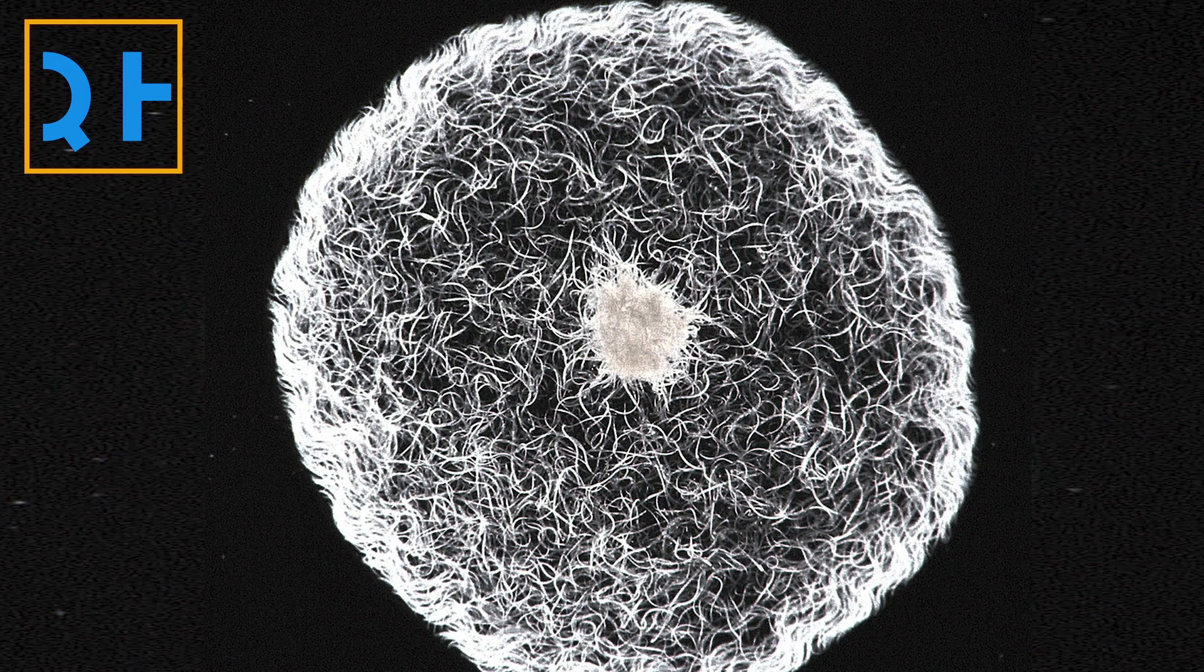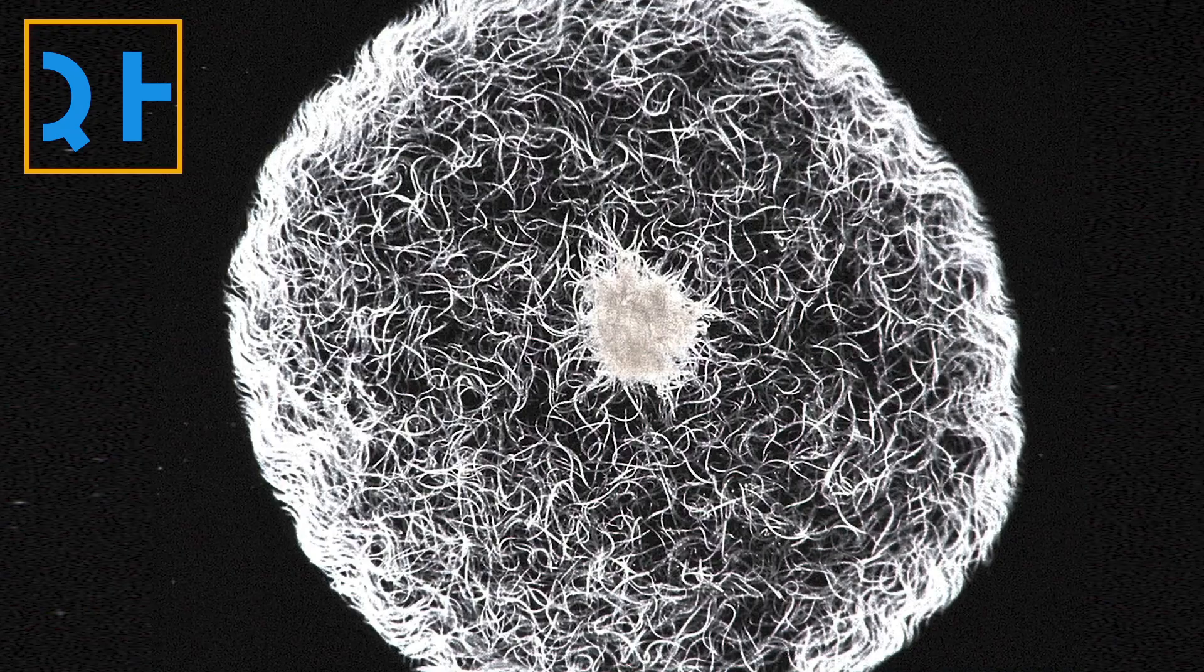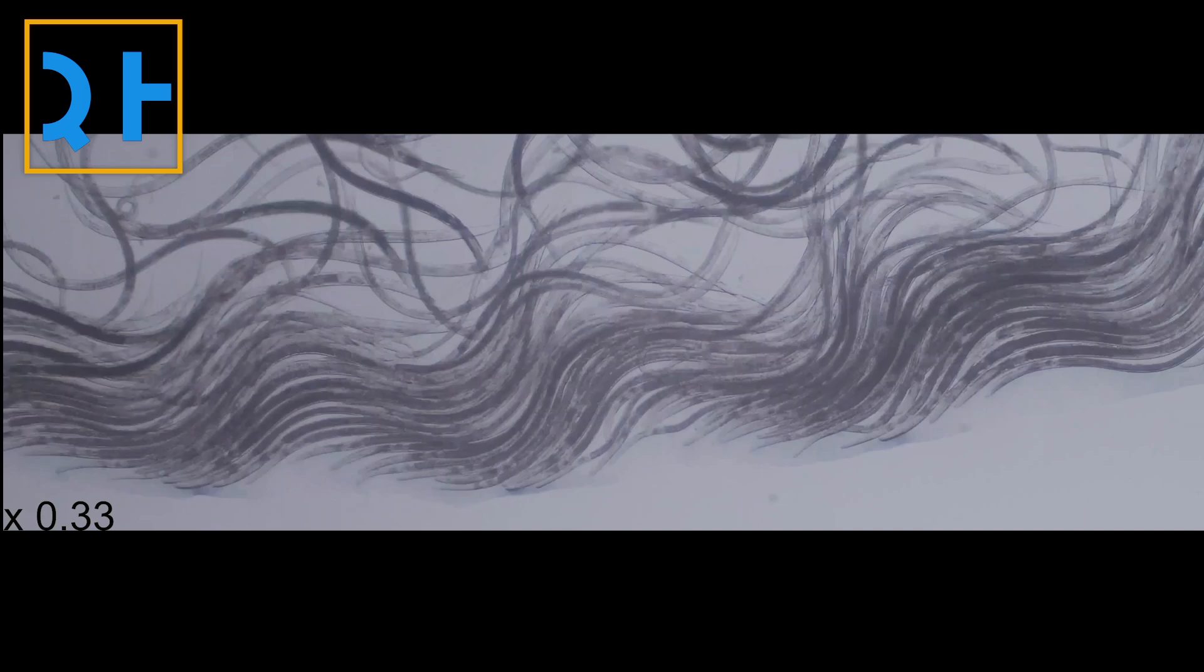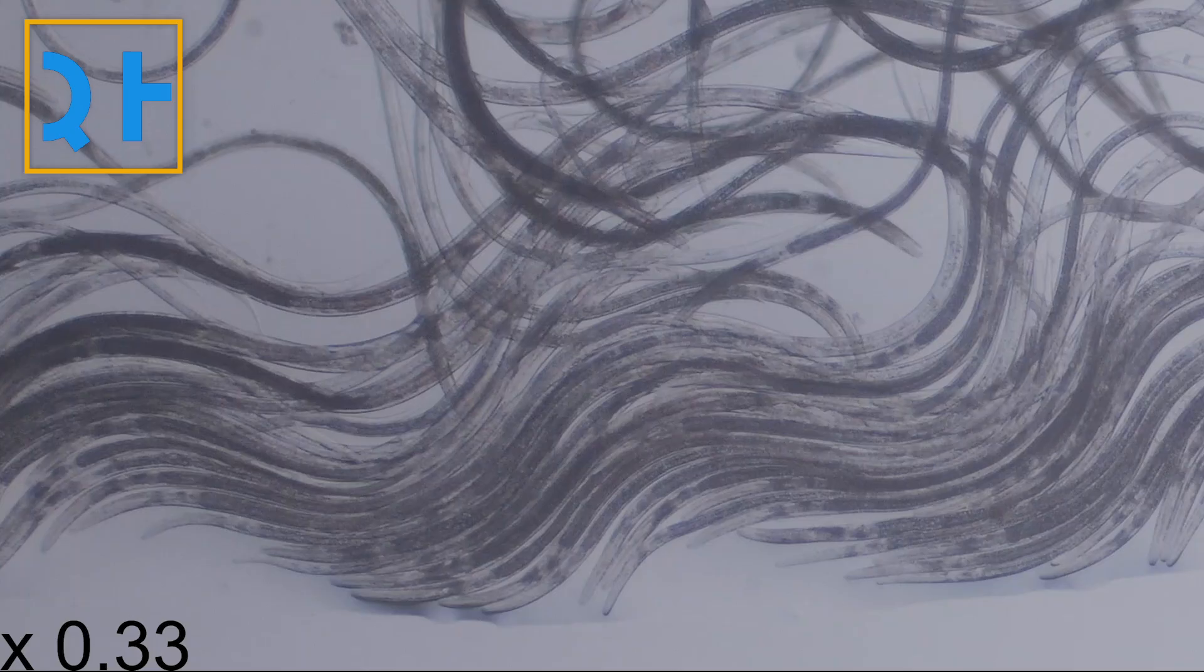Like birds or fish, vinegar eels travel in swarms. When scientists watched these nematodes swim under the microscope, they saw the eels move randomly around the droplet at first, but after an hour, a strange order emerged.